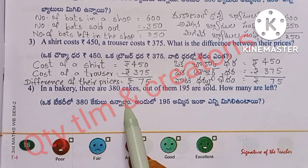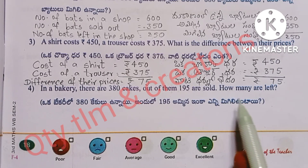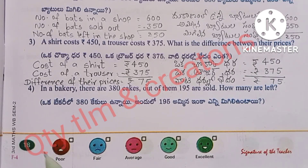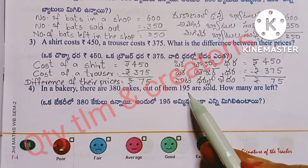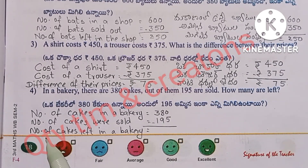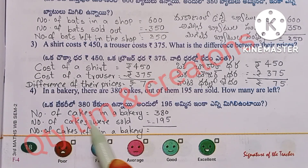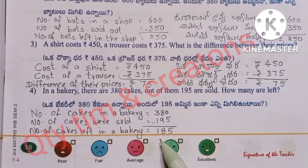Next question: In a bakery there are 380 cakes; out of them 195 are sold. How many are left? Number of cakes in the bakery: 380. Number of cakes sold: 195. We subtract 195 from 380 and get 185. So 185 cakes are left in the bakery.